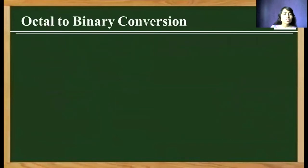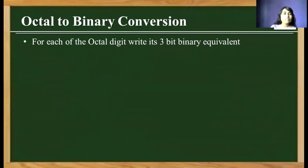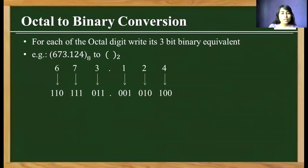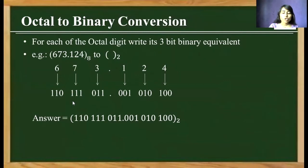Next, how to convert octal to binary. It is simple — since 3-bit binary is equivalent to one octal number, one octal number is equivalent to 3 bits of binary. For example, with octal number 673.124: 4 has binary equivalent 100, 2 is 010, 1 is 001, 3 is 011, 7 is 111, and 6 is 110. Simply write these out to get the full binary answer.